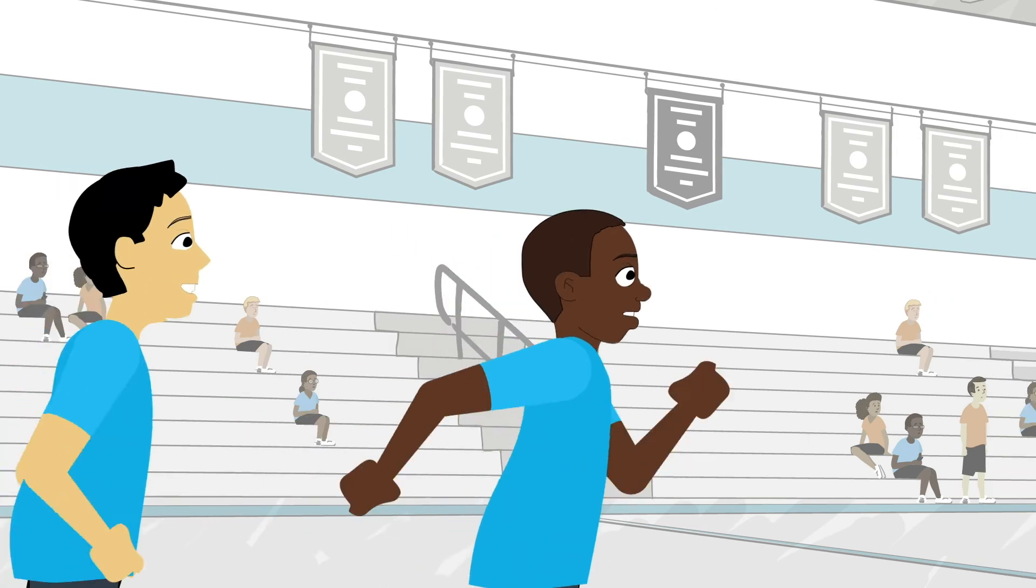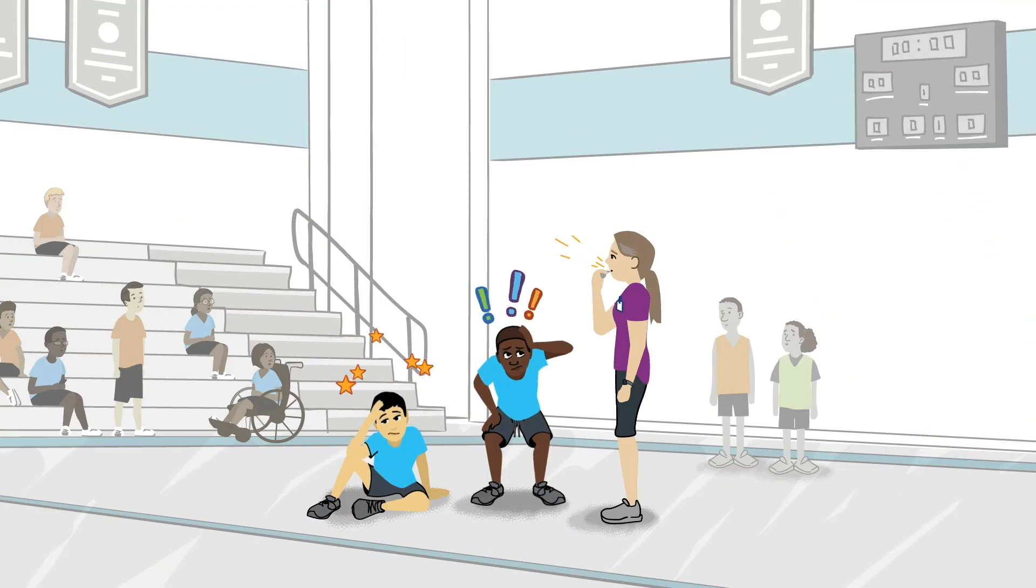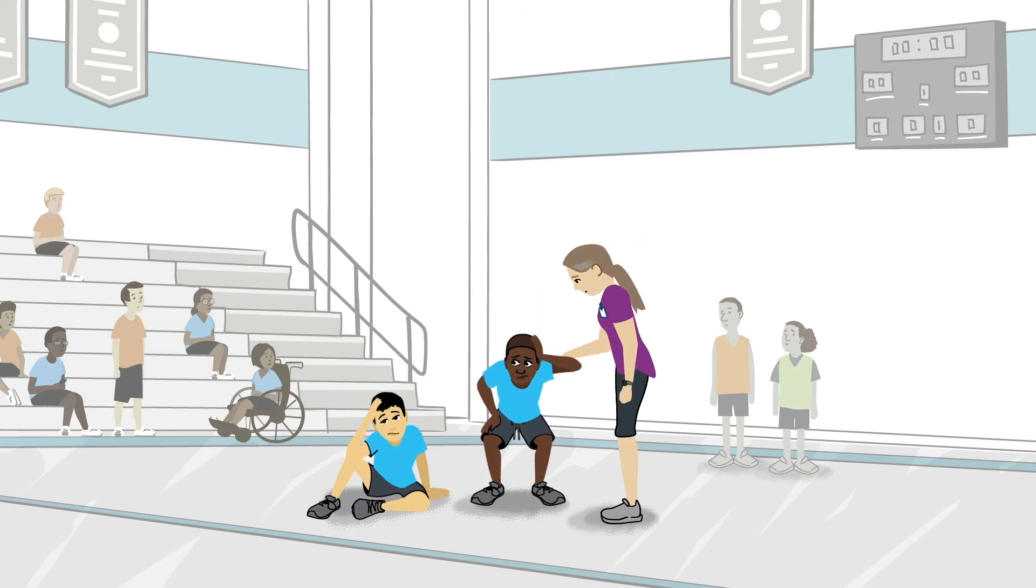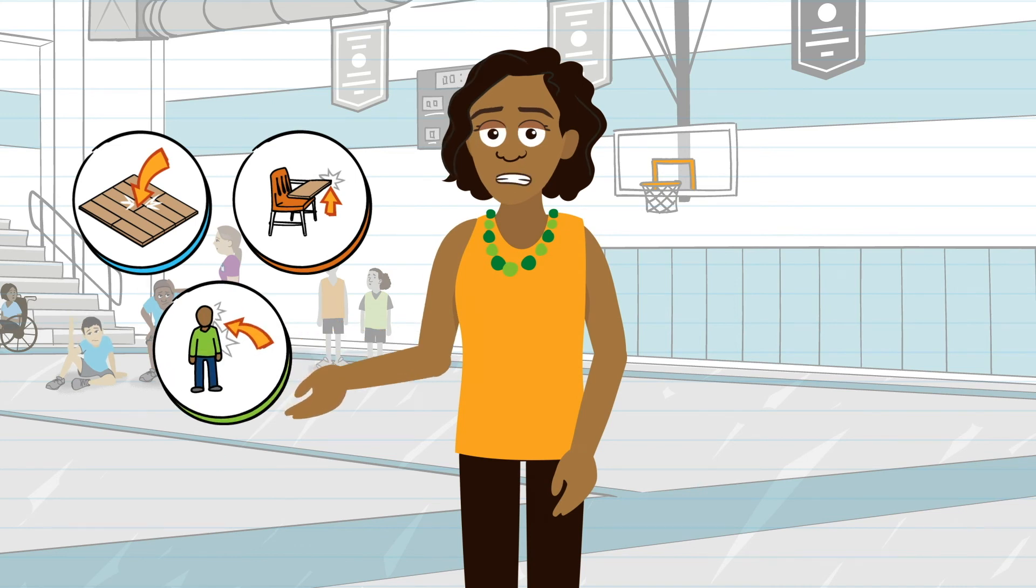Such as during PE class, playground time, or sports. However, concussions can happen anytime a student's head comes into contact with a hard object, such as a floor, desk, or another student's head or body.